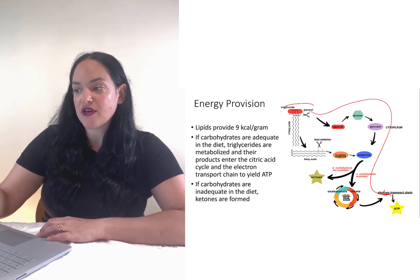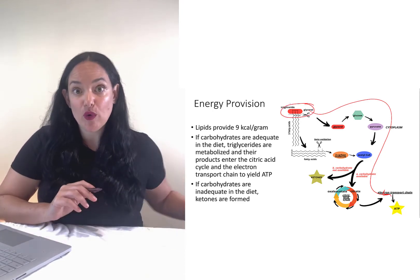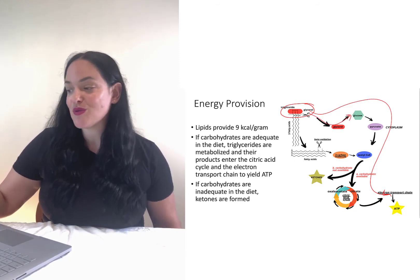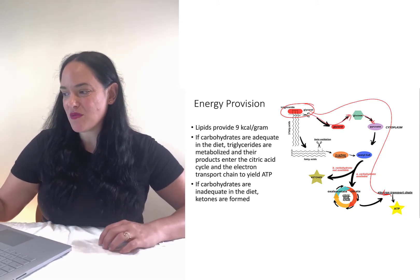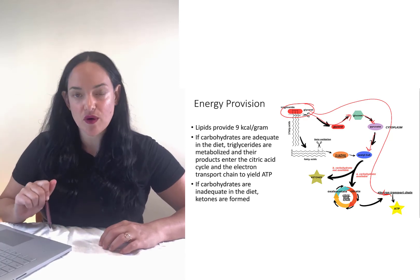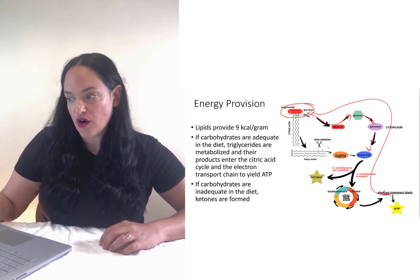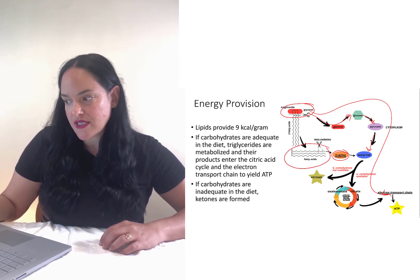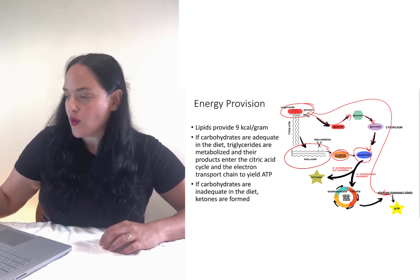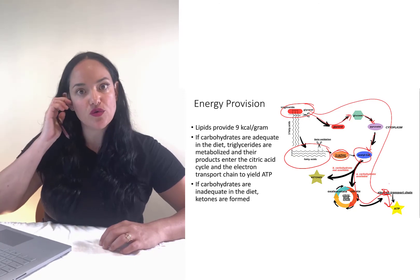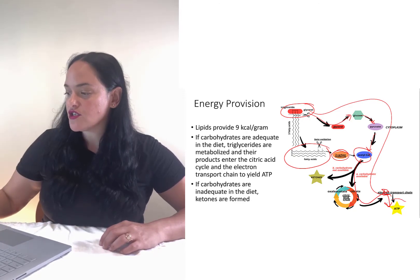The glycerol backbone of a triglyceride can be used to make glucose, which can then get metabolized into pyruvate and down into acetyl-CoA. The majority of our triglyceride — our fatty acids — are broken down two carbons at a time to form acetyl-CoA, which can then enter the citric acid cycle and go through the electron transport chain to generate ATP.